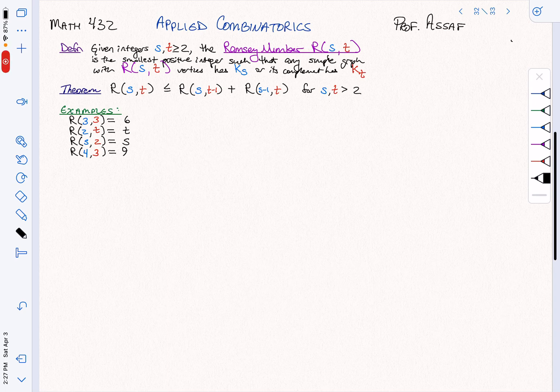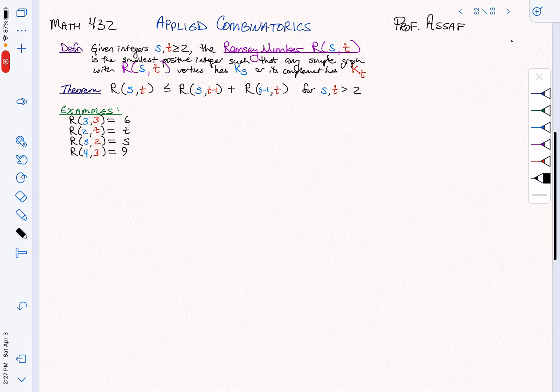Let's compute one more Ramsey number. So let's review what we have already. We know that if one of our inputs is 2, we can compute that. We computed that R of 3, 3 is 6, and we've just computed that R of 4, 3 is 9.